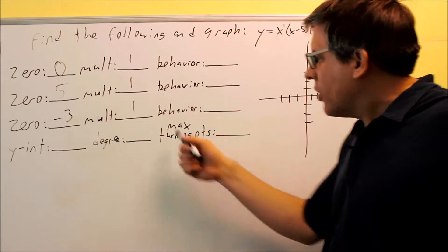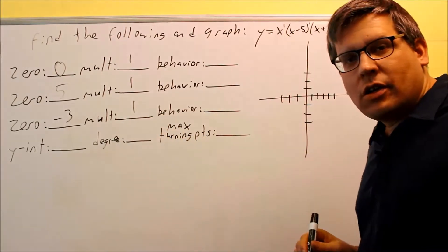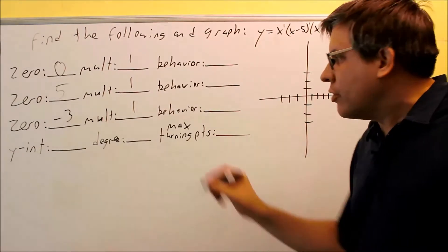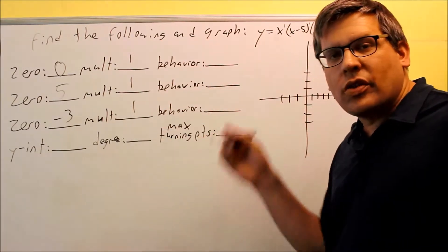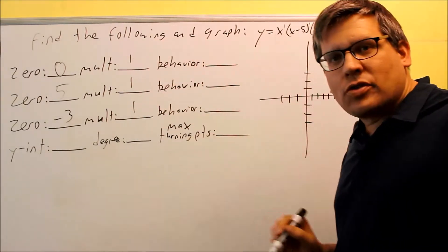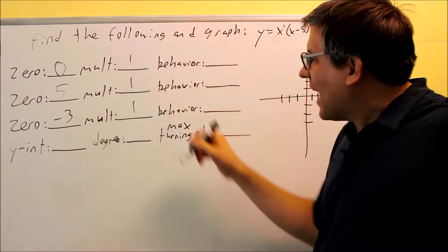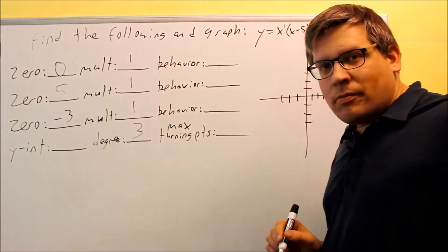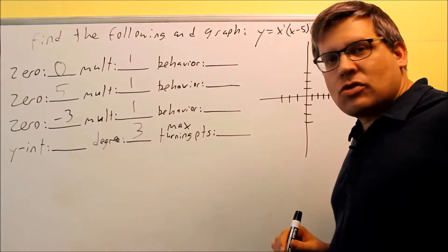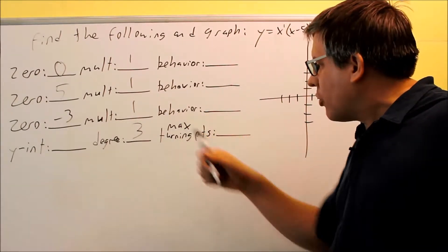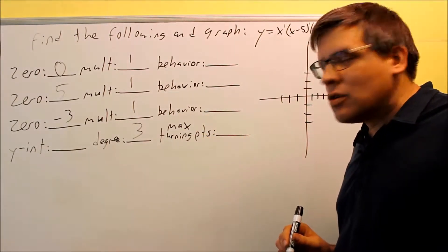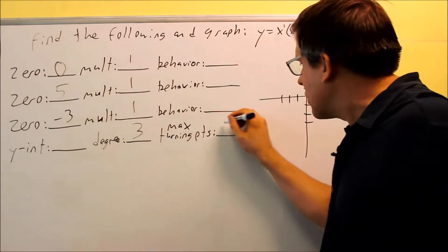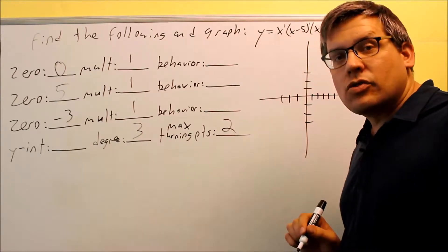Here's how you find the degree. You're going to add all the multiplicities together. Your degree is always equal to the sum of your multiplicities. So if I add those together, I'm going to get three. Because the degree is three, I'm going to know the maximum number of turning points, which is always one less than your degree — so that means two.